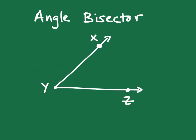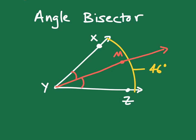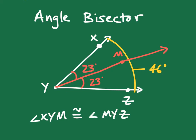We could also have an angle bisector, which is typically a ray that cuts an angle in half. Let's say the whole angle is 46 degrees, and we have a ray YM such that YM cuts this angle into two congruent parts. Each of the two individual angles will be 23 degrees. We can write the congruency statement as: angle XYM is congruent to angle MYZ. If this is an angle bisector, we have two congruent angles.